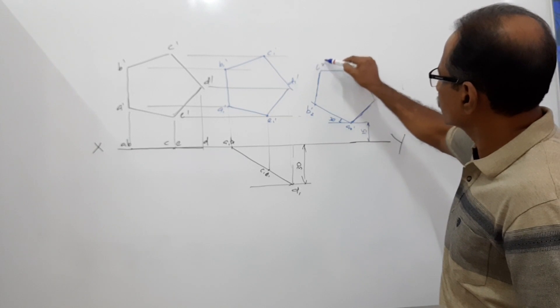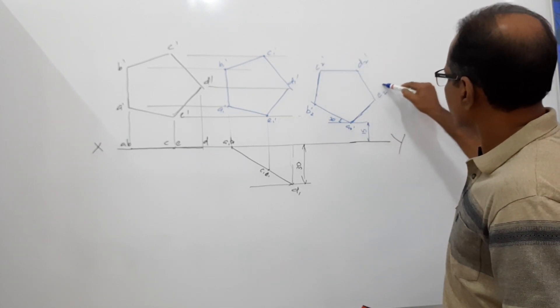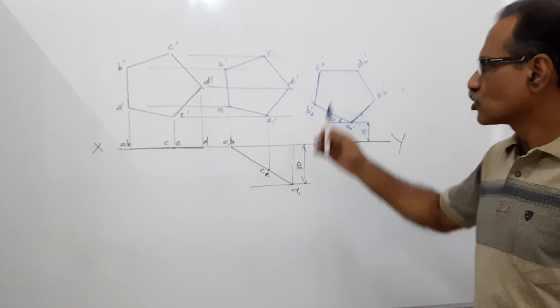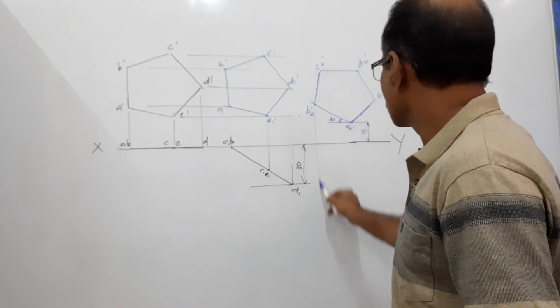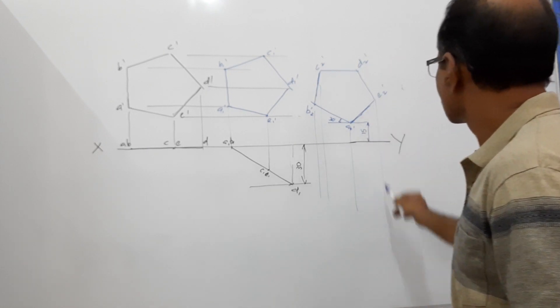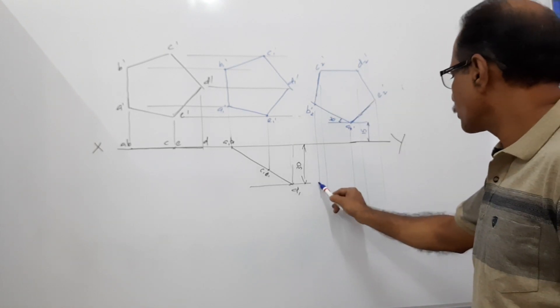C2 dash, D2 dash, E2 dash. Draw vertical projectors down. Draw horizontal projectors.